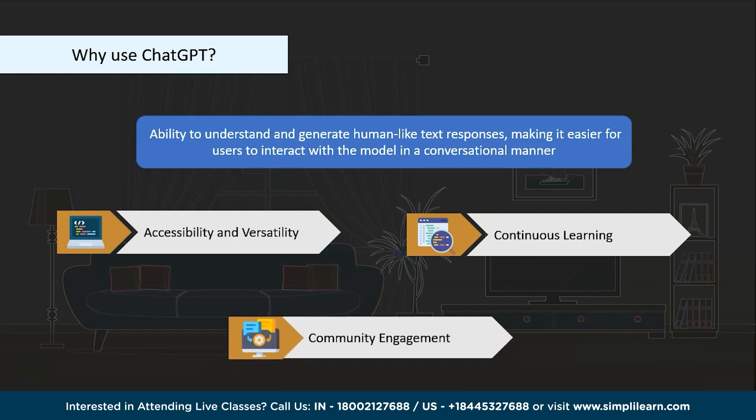Finally, community engagement is a major factor. OpenAI has actively engaged with the developer community and the public, encouraging feedback, hosting competitions, and releasing tools and resources to enhance the usability of this language model. This open and collaborative approach has fostered a vibrant community of users and contributors, further fueling the popularity of ChatGPT.